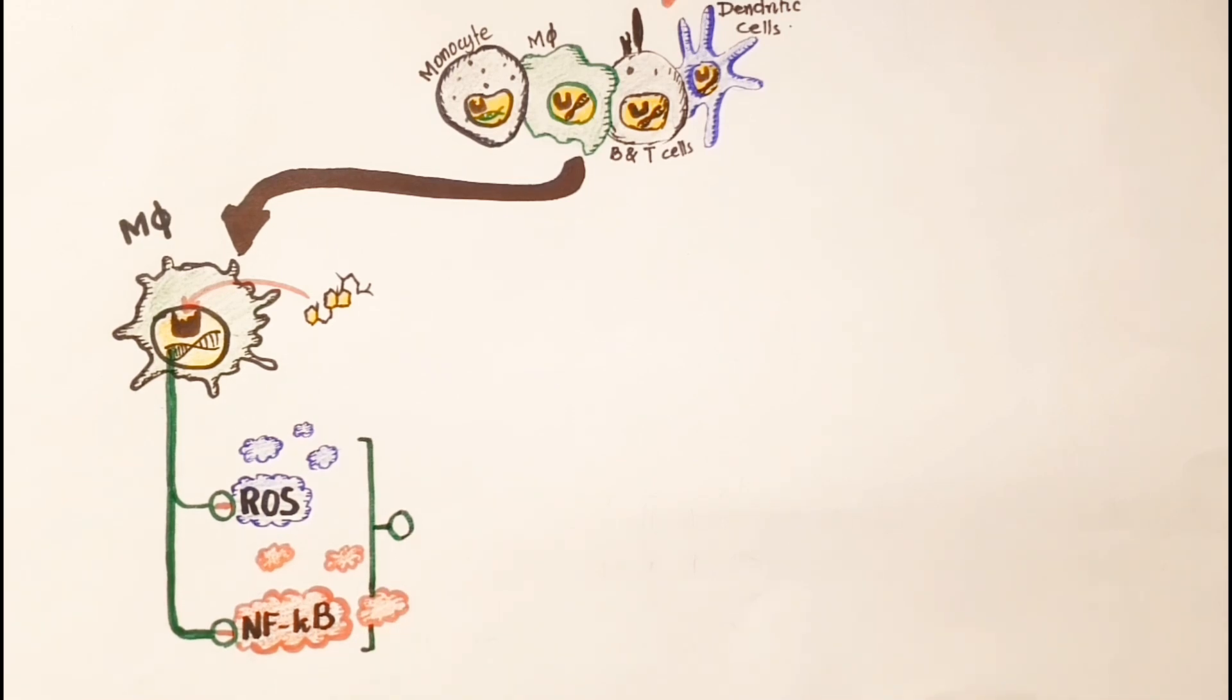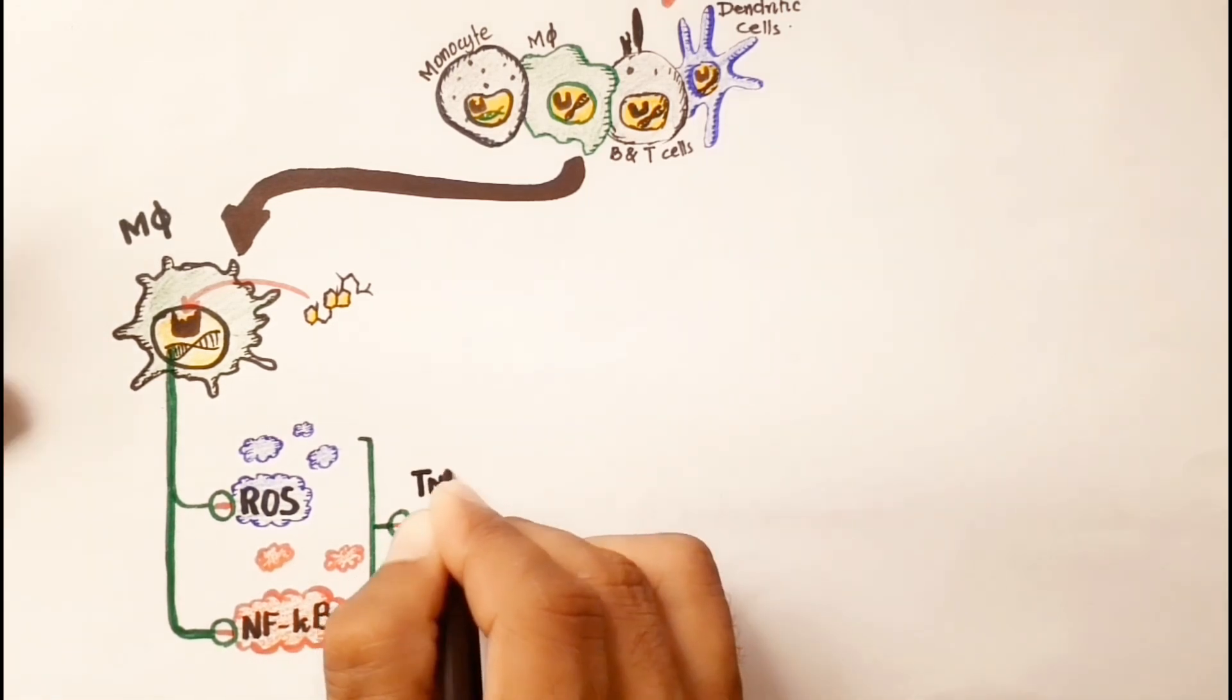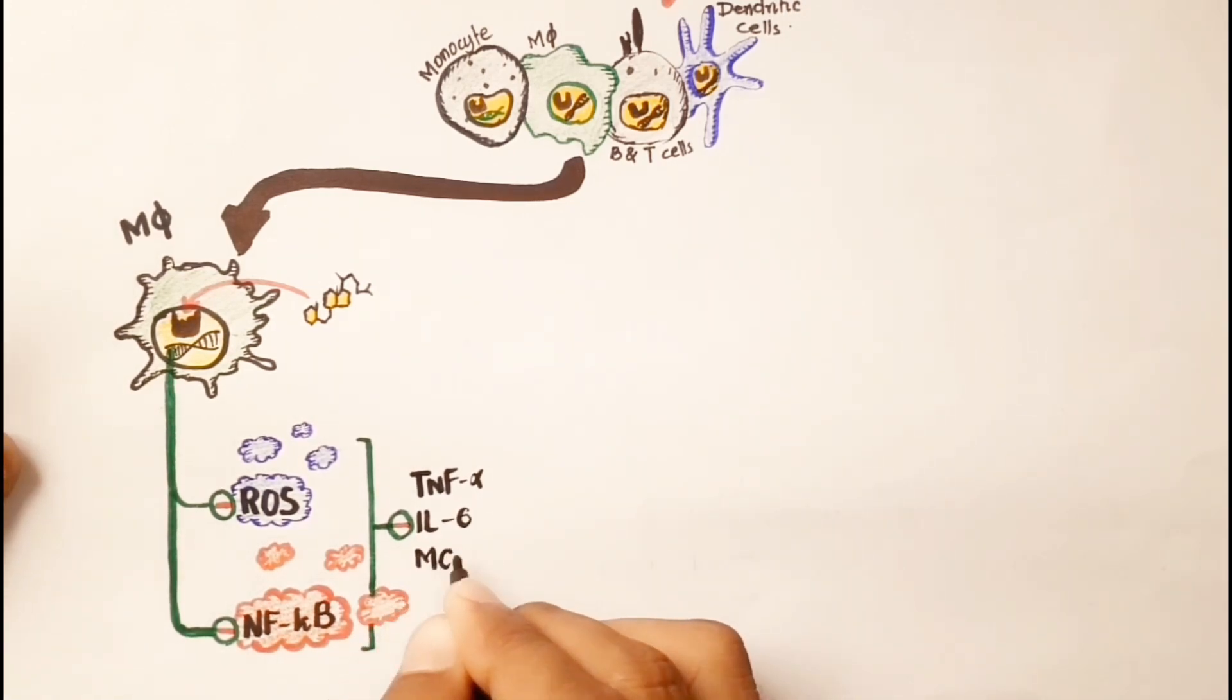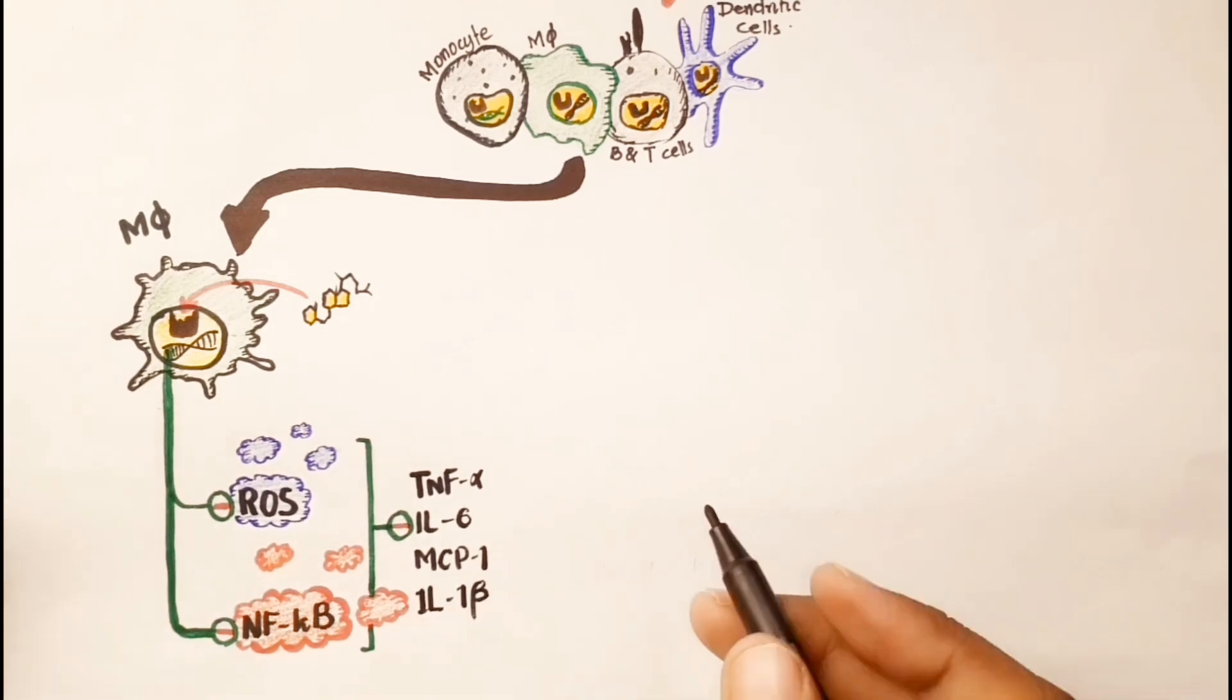These pro-inflammatory genes include TNF-alpha, interleukin-6, monocyte chemotactic protein-1, and interleukin-1 beta.